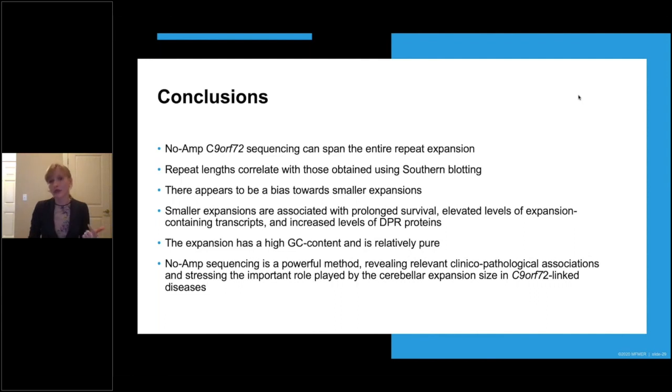Smaller expansions are associated with prolonged survival, elevated levels of expansion containing transcripts, and increased levels of DPR proteins. The expansion itself has a very high GC content and is relatively pure. Based on this information, we concluded that no-amp sequencing is a powerful method that allows revealing relevant clinical pathological associations. And it stresses the important role played by the cerebellar expansion size in C9ORF72 linked diseases.